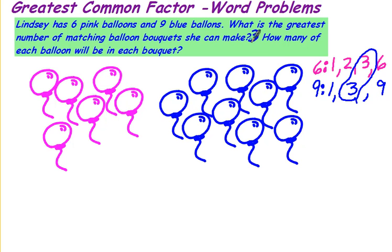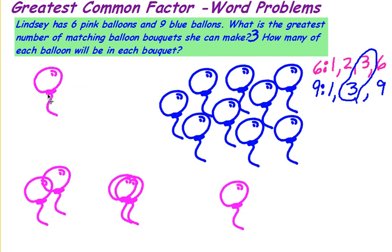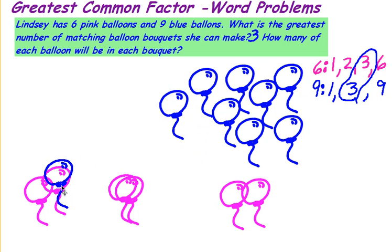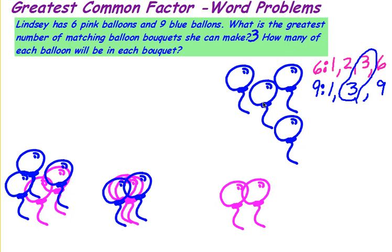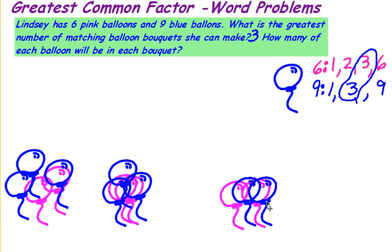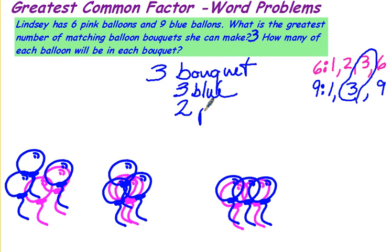So we can make three matching balloon bouquets. Now the next question is how many of each balloon will be in each bouquet? If we're going to have three matching bouquets, we'll have two pink ones in each bouquet. With nine blue balloons and three bouquets, nine divided by three means we can put three blue ones in each bouquet. A bouquet is just a set you're making together. So we will have three bouquets, each with three blue balloons and two pink balloons.